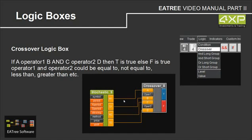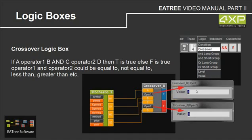Here is an example. A represents the M1 stochastics, B represents the S1 stochastics, C represents M2 and D represents S2. Operator 1 is 'greater than' and operator 2 is 'less than'. So if A is greater than B — if M1 is greater than S1 — and if C (M2) is less than D (S2), then this crossover box is true. So we can open, for example, a long position or a short position.